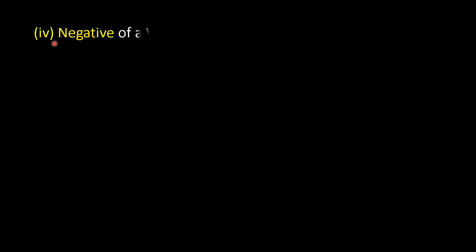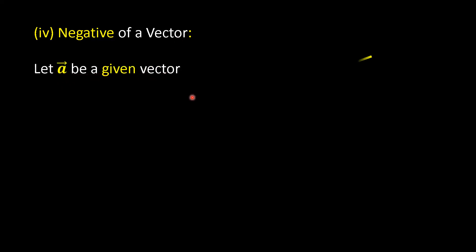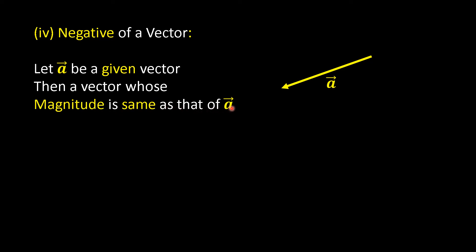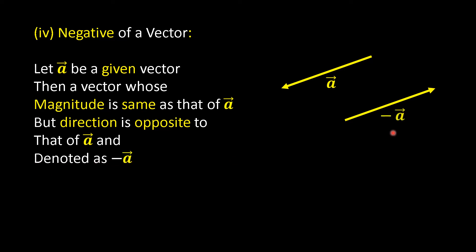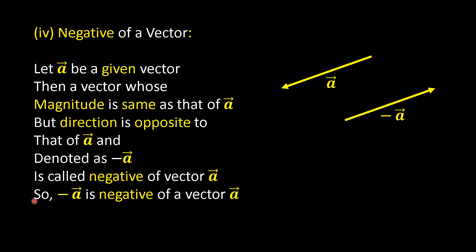The fourth type is the negative of a vector. Let A-bar be a given vector. Then a vector whose magnitude is the same as that of A-bar but whose direction is opposite to that of A-bar, denoted as minus A-bar, is called the negative of vector A-bar. So minus A-bar is the negative of vector A-bar, and vice versa.